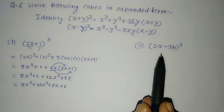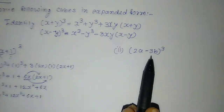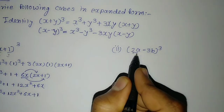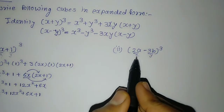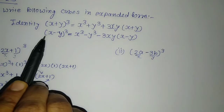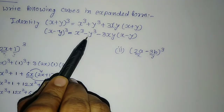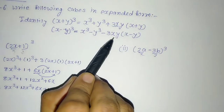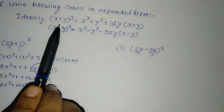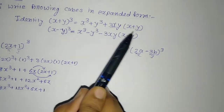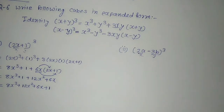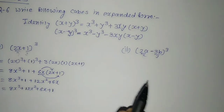For the second sum, (2a − 3b) whole cube: 2a is considered as x and 3b is considered as y, so it is like x minus y whole cube. The identity is: x minus y whole cube is equal to x cube minus y cube minus 3 times x times y times bracket (x minus y). Remember: when it is plus, all signs are plus; when it is x minus y whole cube, all signs convert to minus.